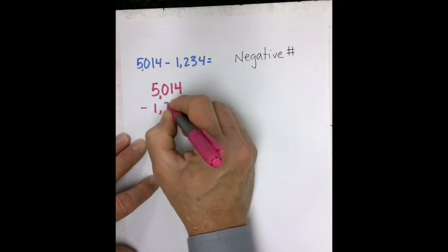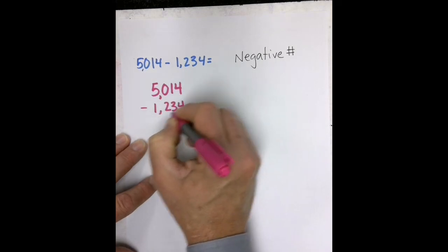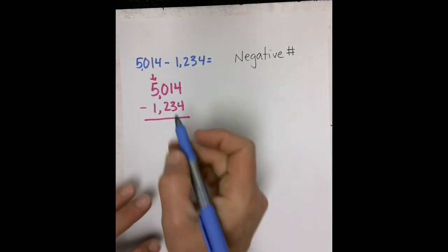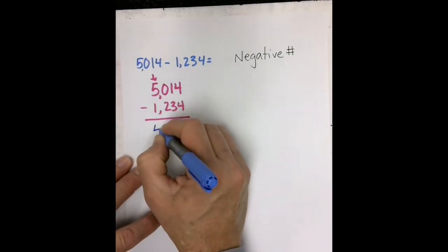Stacking the numbers, the largest on top, the smaller on the bottom. Negative numbers start with the largest place value position. 5,000 minus 1,000 is 4,000.